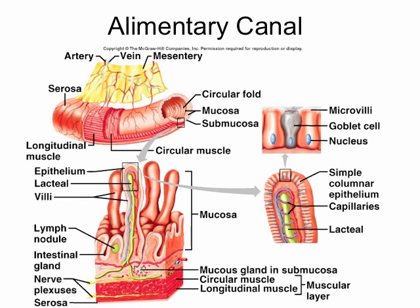The submucosa contains the blood vessels, lymphatics, and nerves, and also in some parts of the digestive tract, glands. Underneath the submucosa we find the muscular layer, and under that the serosa. The muscular layer provides mixing and propulsion, and the serosa provides protection and lubrication.